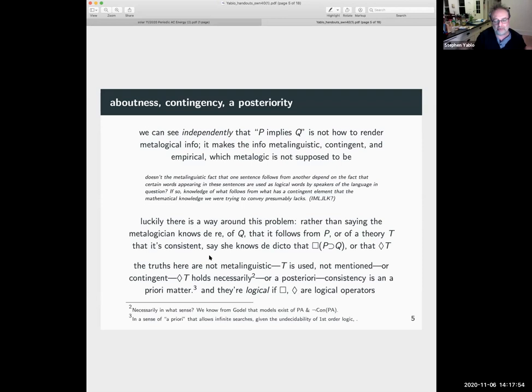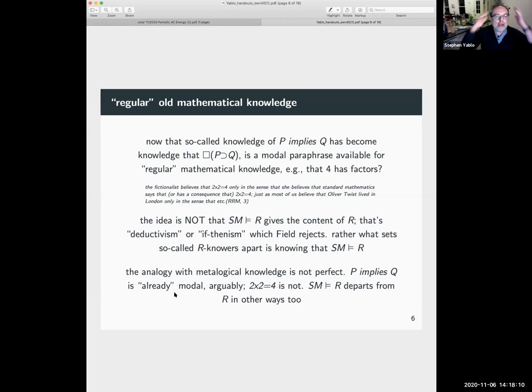So it certainly isn't empirical. Although this is a big question. This is probably why Hargree's an expressivist about a priori versus a posteriori. Okay, so now that so-called knowledge of p implies q has become knowledge that box p then q is a modal paraphrase also available for regular mathematical knowledge.